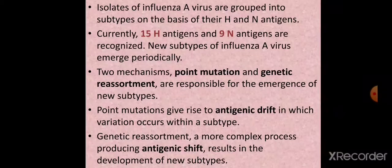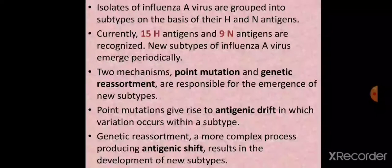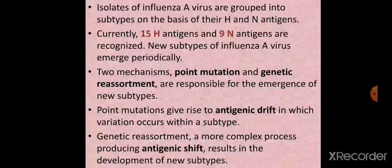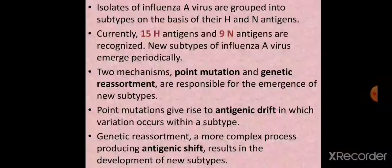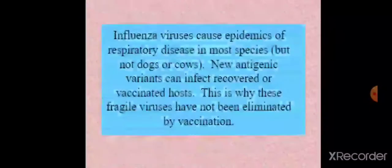These two terms — antigenic drift and antigenic shift — are directly associated with influenza viruses and orthomyxoviruses. Antigenic shift results in the development of new subtypes and is a more complex, bigger phenomenon. Antigenic drift involves variation within a subtype and is comparatively a slower process compared to antigenic shift.